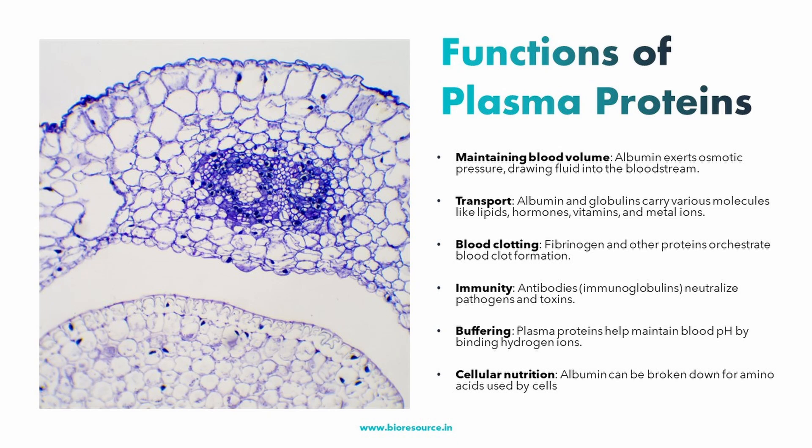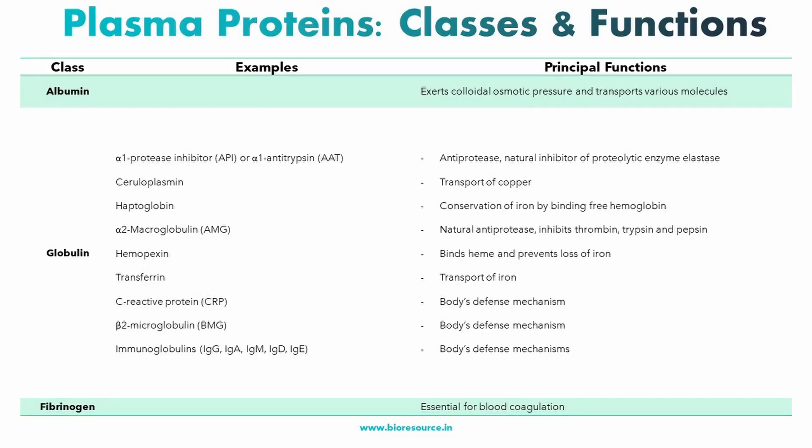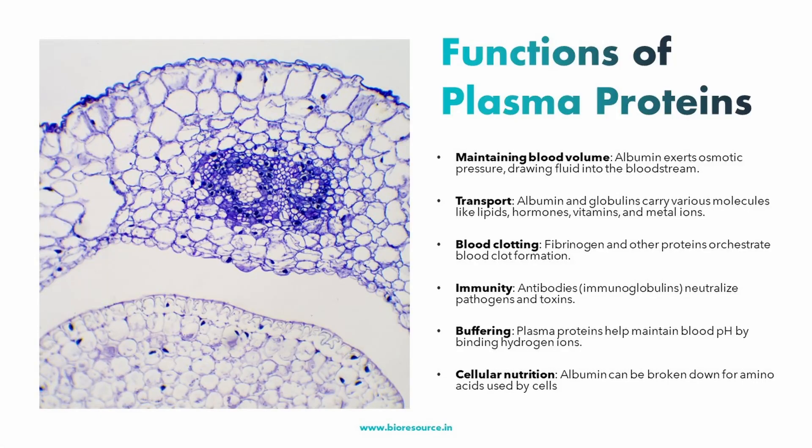Another important function is immunity defense. The immunoglobulins, also known as antibodies, are like our body's highly trained security guards. These Y-shaped proteins have a remarkable ability to recognize and latch onto specific invaders like bacteria and viruses. Once attached, they can neutralize these pathogens directly or call upon other immune cells to eliminate the threat. Plasma proteins also act as buffers, helping to maintain blood pH by binding to excess hydrogen ions, preventing the blood from becoming too acidic or alkaline.